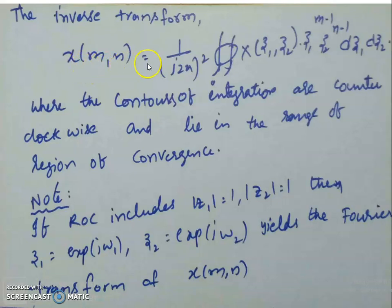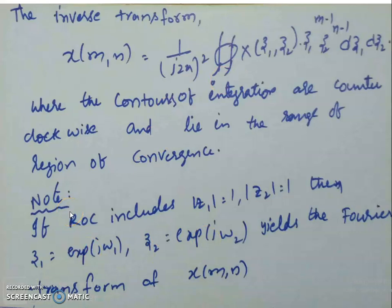The inverse Z-transform is X(M,N) = (1/(j2π)²)·∮∮ X(Z₁,Z₂)·Z₁^(M−1)·Z₂^(M−1) dZ₁ dZ₂, where the contour integration is over the region of convergence. The relation between the Fourier transform and the Z-transform: if the ROC includes |Z₁| = 1 and |Z₂| = 1 (the unit circles), then substituting Z₁ = e^(jω₁) and Z₂ = e^(jω₂) yields the Fourier transform of X(M,N). This is only possible when the ROC includes the unit circles.